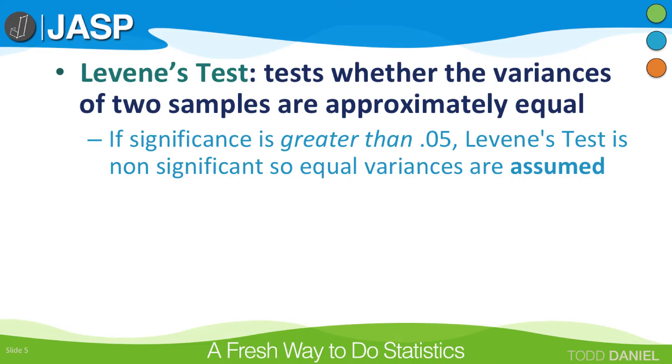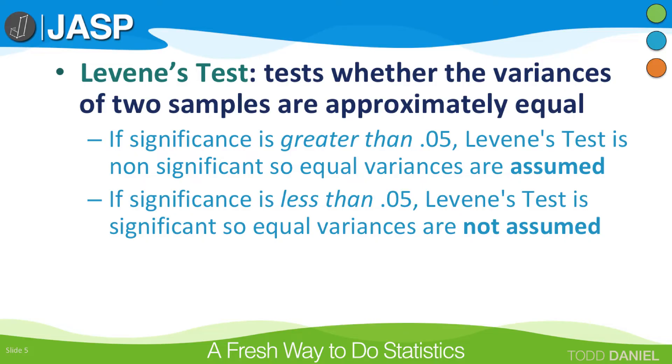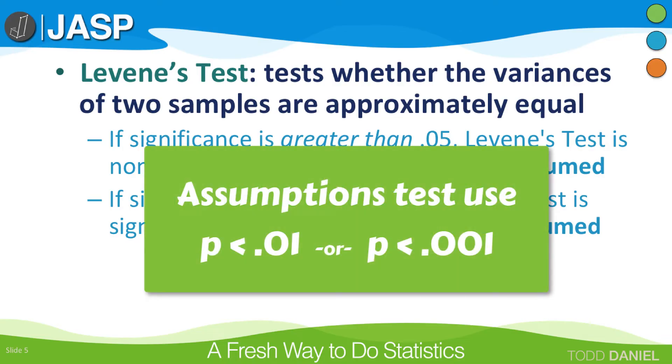That is what we want. If the Levene's significance test is less than 0.05, then the Levene's test is significant. The variances differ, or are not homogeneous, and the assumption has been violated. So in our ideal world, we would not want variances to be statistically significantly different. We do not want the Levene's test to be less than 0.05. And in later examples, I'm going to explain why 0.05 may not be the best standard to use. We would probably use 0.01, or even 0.001.